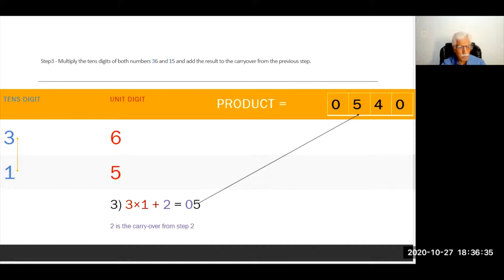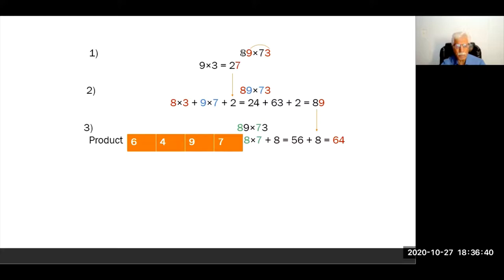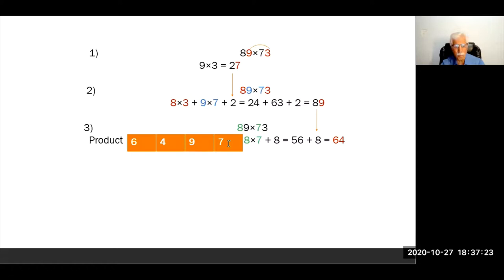To understand the procedure I have another example. In this example I have chosen 89 and 73. We do the same three steps. The first thing we do is multiply the unit digits — the same as the previous example. So 9 into 3 is 27. Seven goes to the first location of our product and that is the unit digit of our product. And 2 is the carry over to the next step.